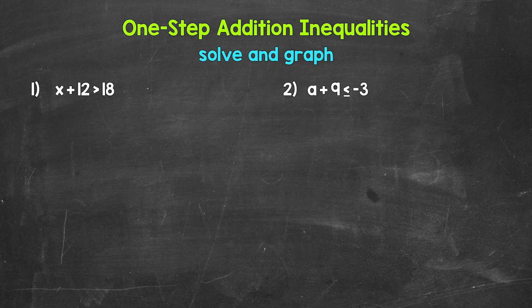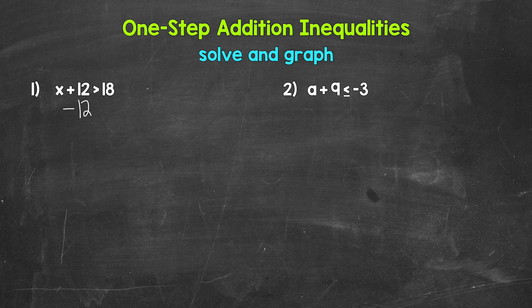Once we solve the inequality, we can graph the solutions — all of the values that make the inequality true. Let's jump into number one, where we have x plus 12 is greater than 18. So we need to isolate that variable of x. We are adding 12, so we need the inverse operation. The inverse operation of addition is subtraction. So subtract 12 from the left side of the inequality. Whatever we do to one side, we must do to the other in order to keep the inequality balanced. So subtract 12 from the right side as well.